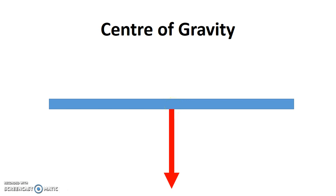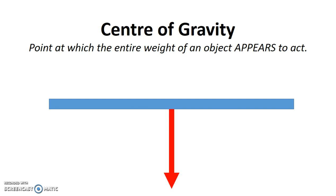So for any object, what is the center of gravity? Center of gravity is basically just a point at which the entire weight of an object appears to act. This is the key here. It's not where the entire weight is acting, but the entire weight appears to act.